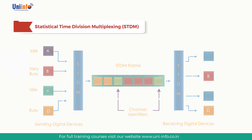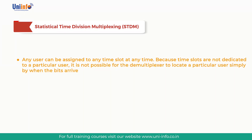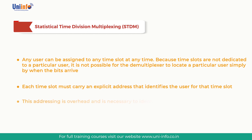In statistical TDM, any user can be assigned to any time slot at any time. Because time slots are not dedicated to a particular user, it is not possible for the demultiplexer to locate a particular user simply by when the bits arrive. Instead, each time slot must carry an explicit address that identifies the user of that time slot. This addressing is overhead and is necessary to identify the receivers.